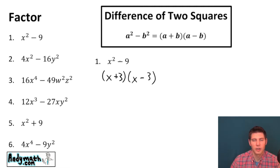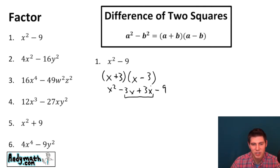x plus three times x minus three is x squared minus nine. And I'll show you on one of these that if we FOIL it out you'll see it'll bring us back. So x times x is x squared. x times negative three is negative three x. Three times x is positive three x. And three times negative three is negative nine.